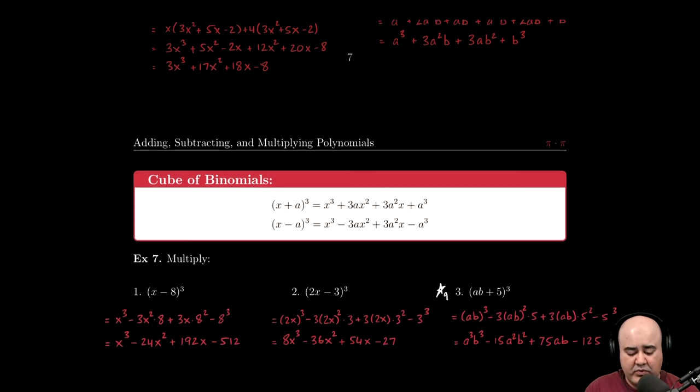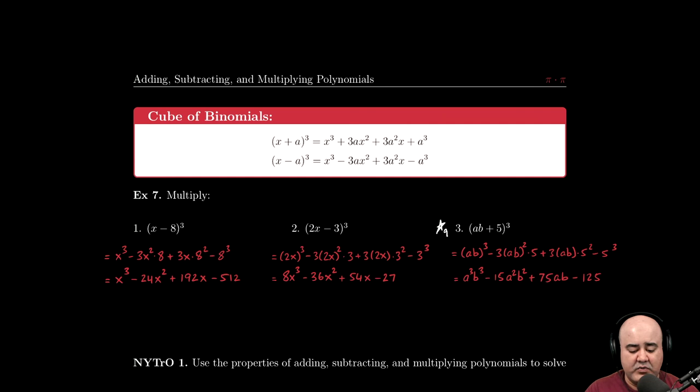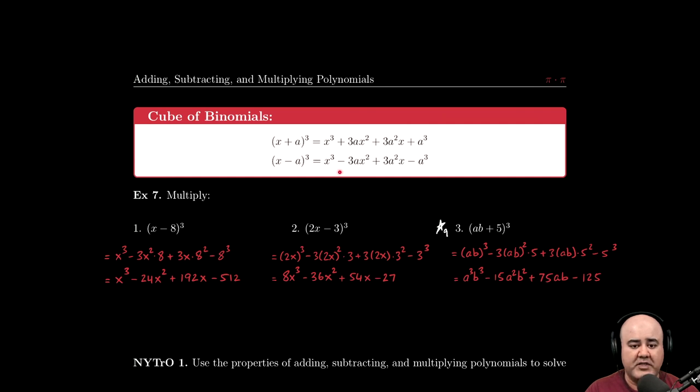And that's exactly what we have here in this formula. With the (x - a)³ formula, we have plus, minus, plus, minus. And then with the plus, all the terms are the same.